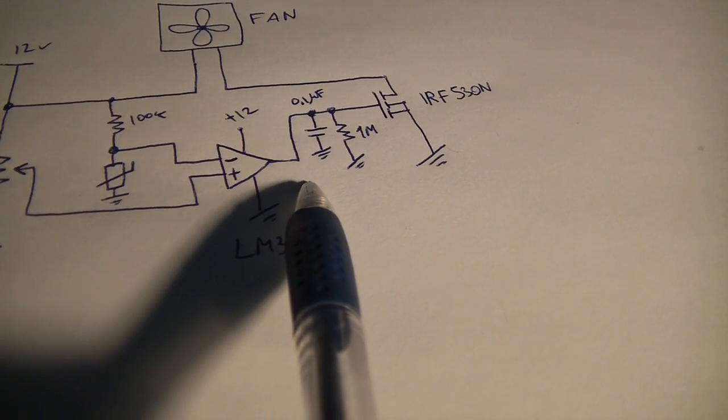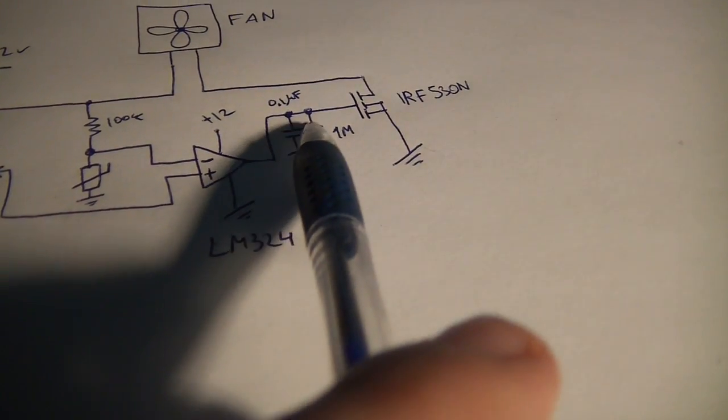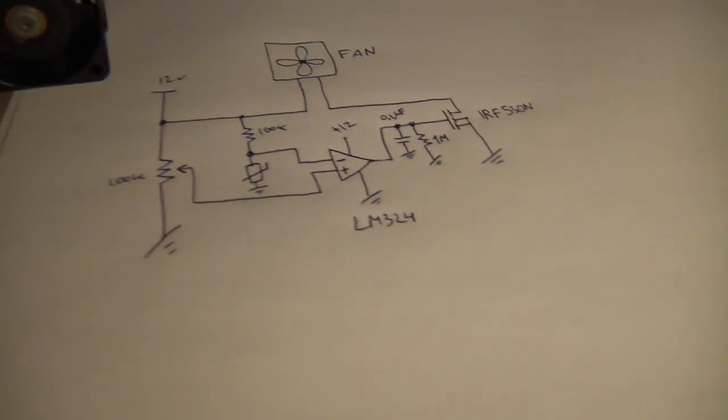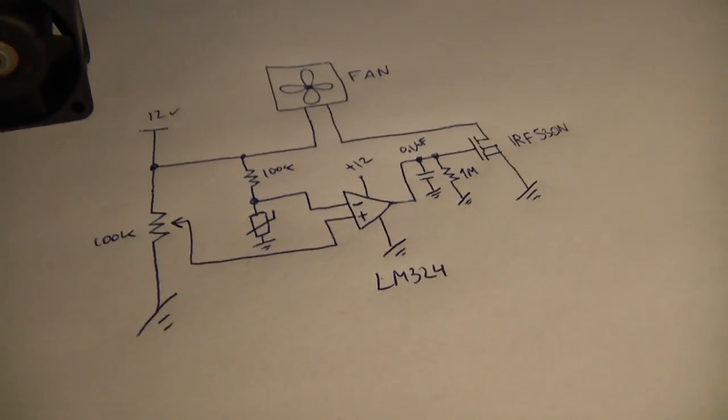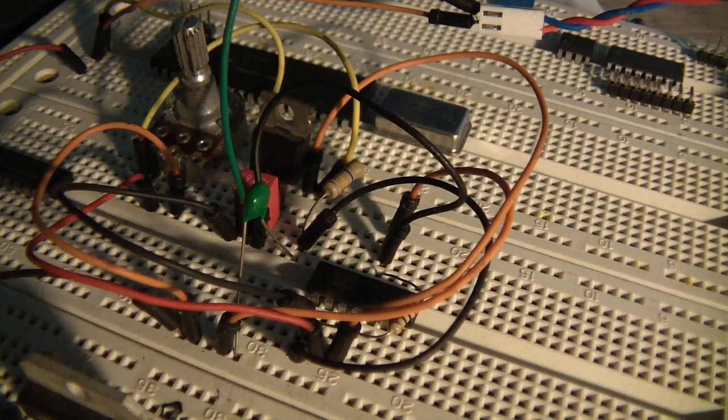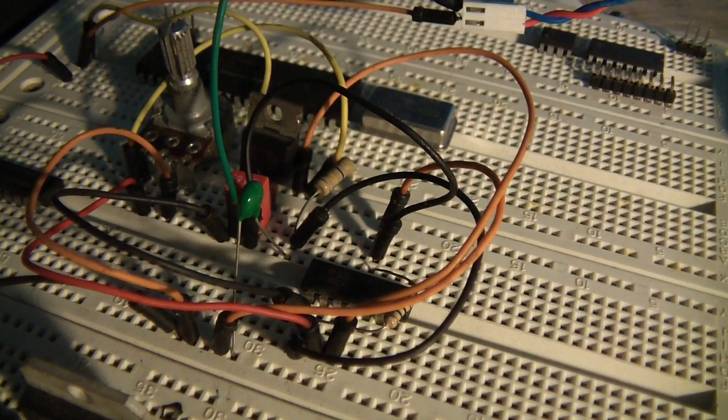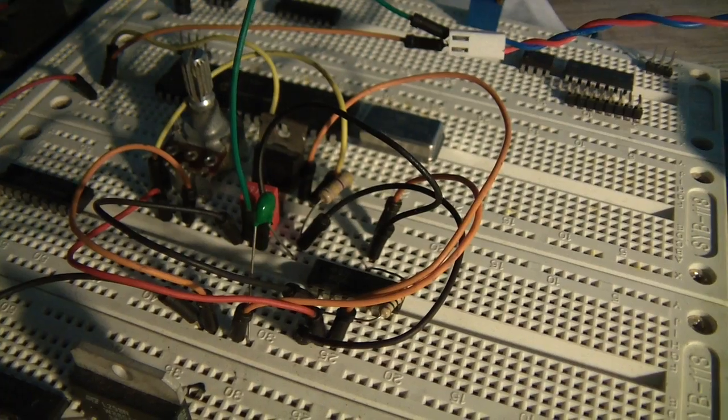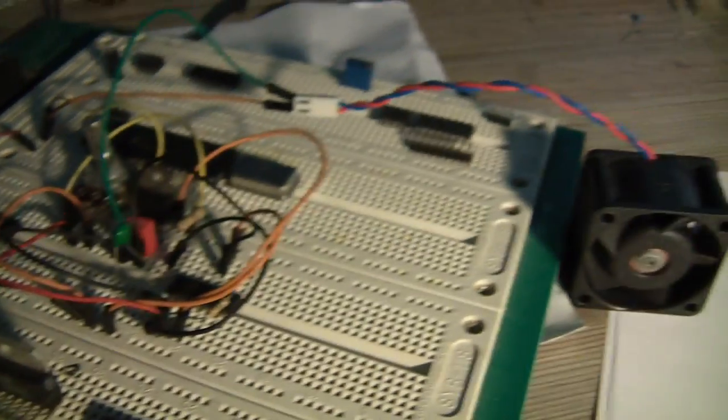Again, when the thermistor is getting hot enough, this signal will be lower than this one, which means the comparator will output a 12-volt signal and will turn on the MOSFET and the fan. Easy enough. I have constructed this circuit on my breadboard and I will now demonstrate how it works.